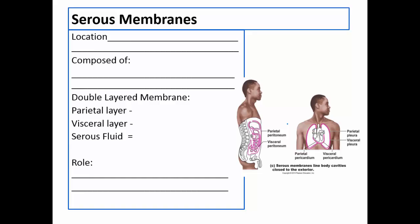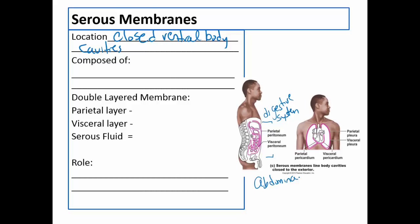The next membranes are called serous membranes, and these are found in closed ventral body cavities. Ventral means towards the front of the body. Closed means they do not open to the outside of the body. One example involves the abdominal cavity, which contains abdominal organs that are part of the digestive system. Though the digestive system opens to the outside and is lined with mucous membranes, the cavity itself does not open to the outside, so it is lined with serous membranes.